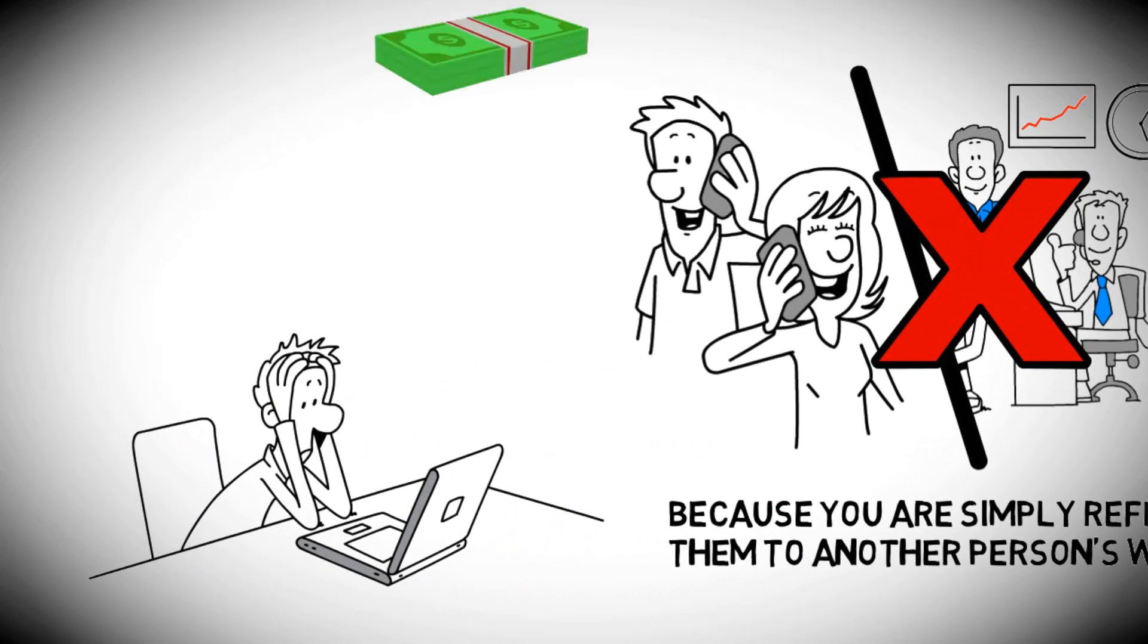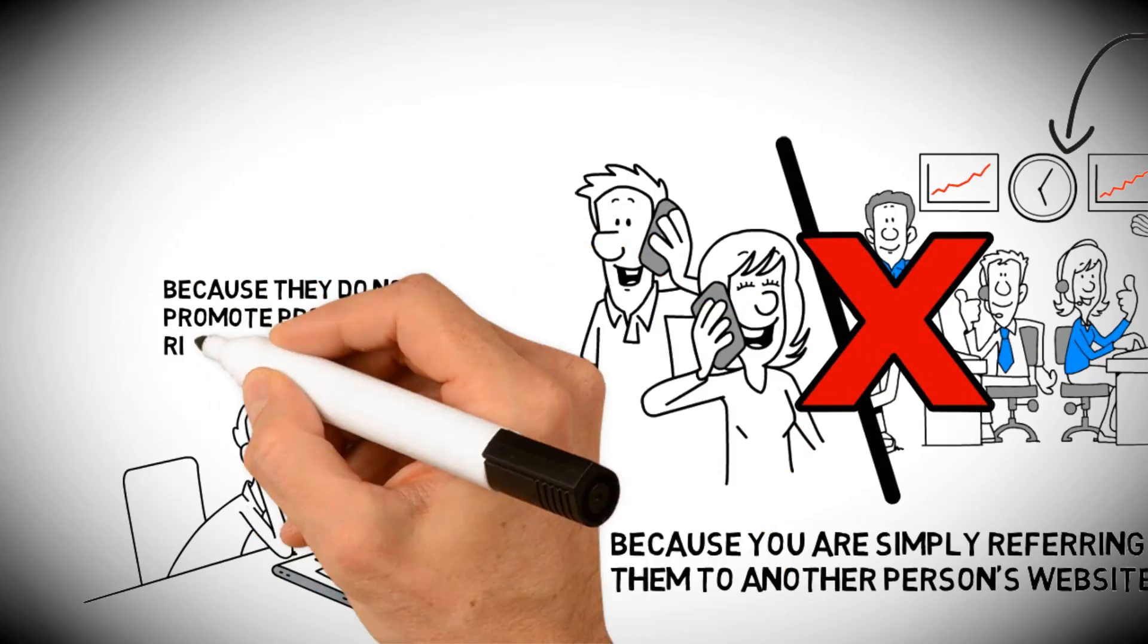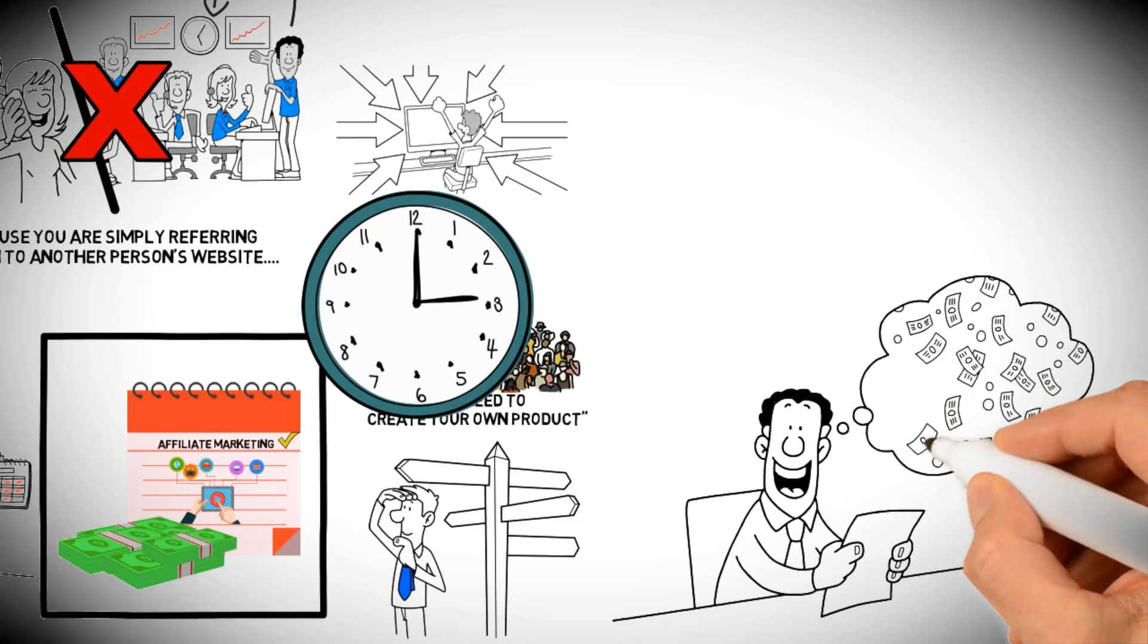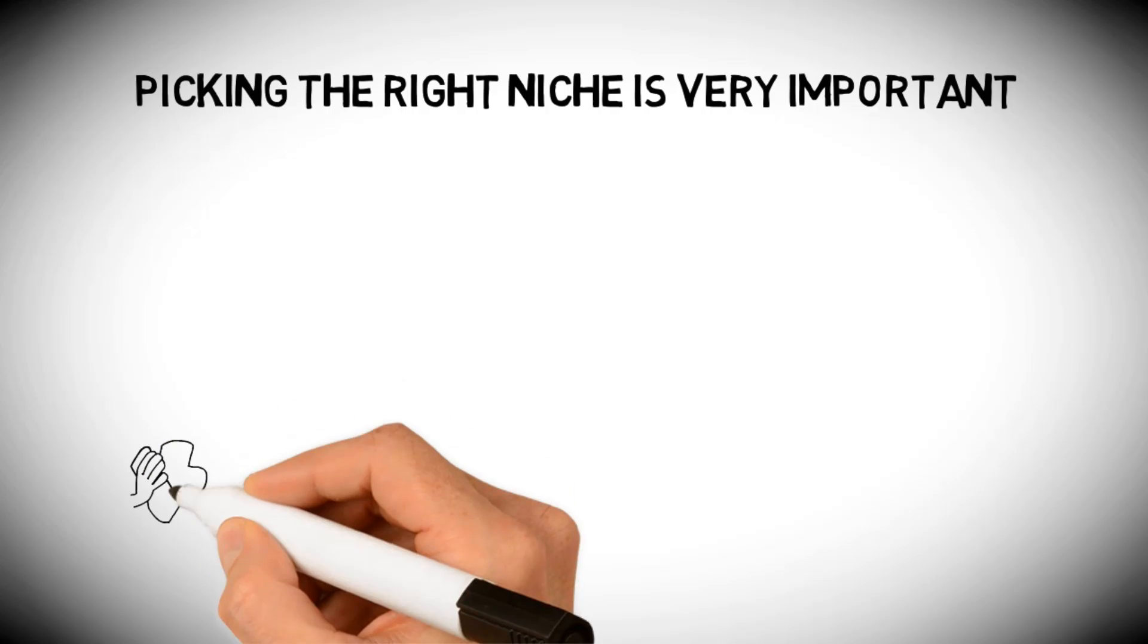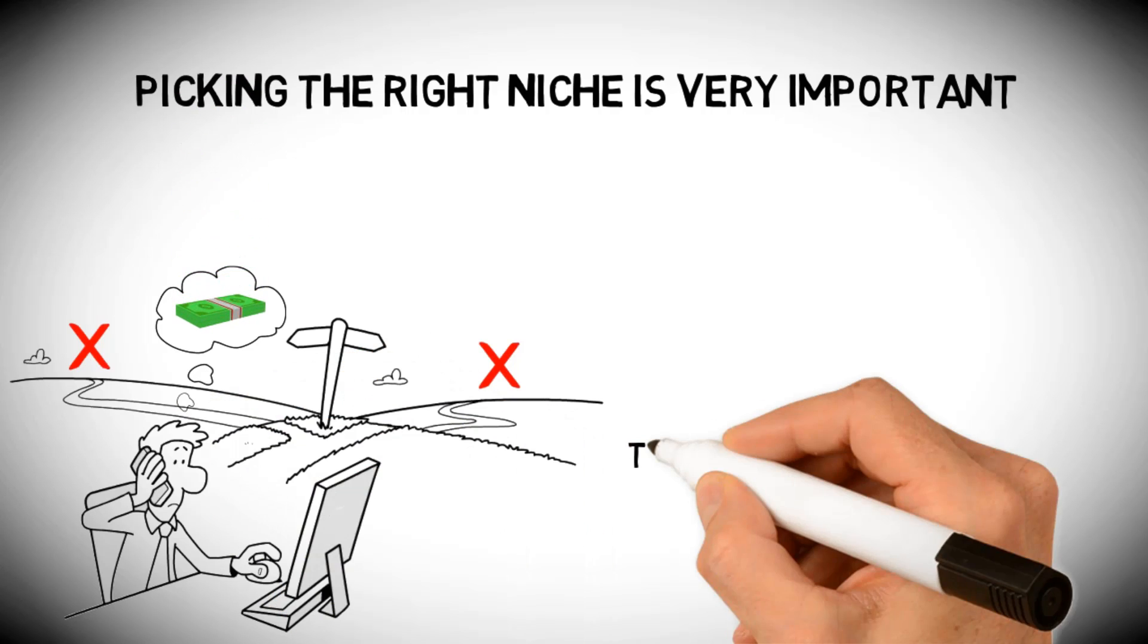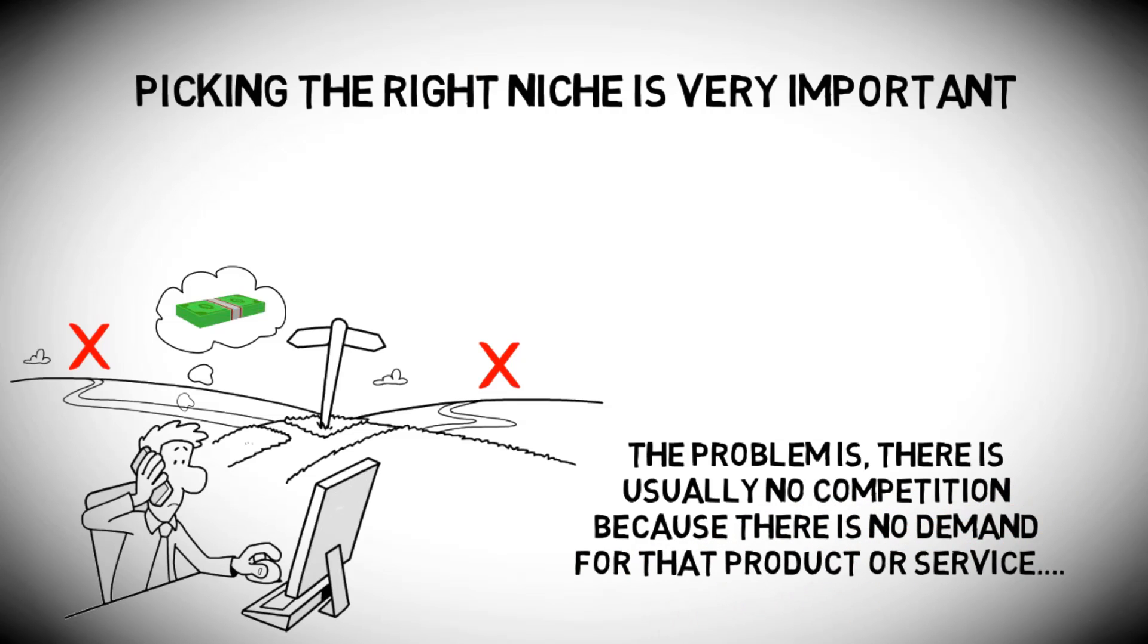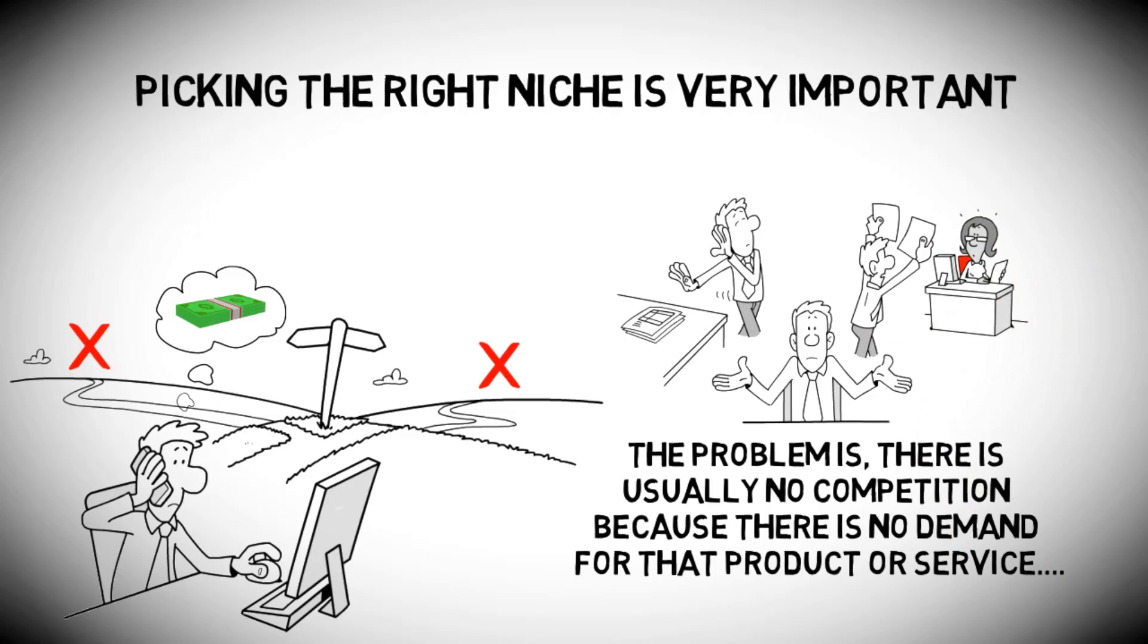The problem is the vast majority of affiliate marketers fail to make significant money because they do not promote products the right way. Here are some tips to help you become profitable in a short time. First, picking the right niche is very important. Some marketers go into niches that have no competition thinking those offer the most income potential. The problem is there is usually no competition because there's no demand for that product or service.